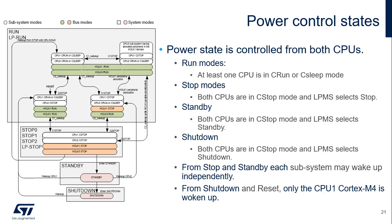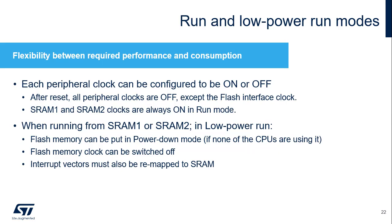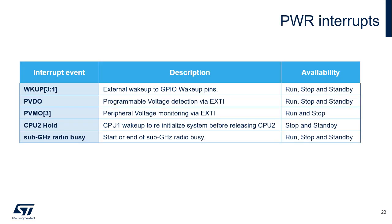The sub-gigahertz radio peripheral operation has no impact on the CPUs and system operating mode. Each peripheral clock can be configured to be on or off in Run and Low-power Run modes. By default, all peripheral clocks are off except the Flash interface clock. The SRAM-1 and SRAM-2 clocks are always on in Run mode. When running from SRAM-1 or SRAM-2 in Low-power Run modes, the Flash memory can be put in Power-down mode thanks to software, and the Flash clock can be switched off. The Flash memory must not be accessed when it is switched off; consequently, interrupts must be mapped in SRAM using the Cortex-M4 vector table offset register.